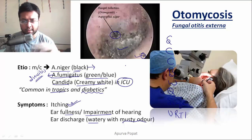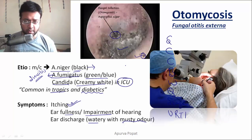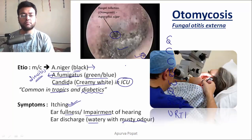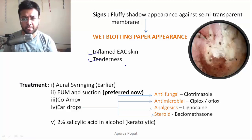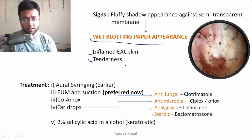Regarding the signs of otomycosis: the external auditory canal skin will be inflamed with tenderness, and the tympanic membrane may show a wet blotting paper appearance due to fluffy shadow against the semi-transparent membrane.